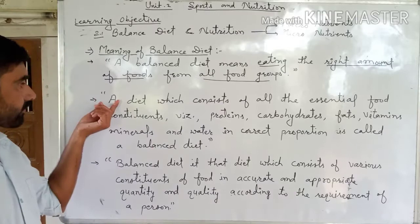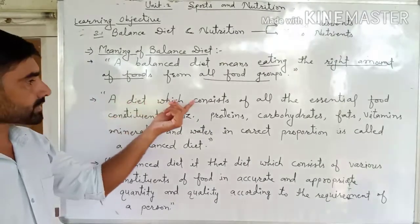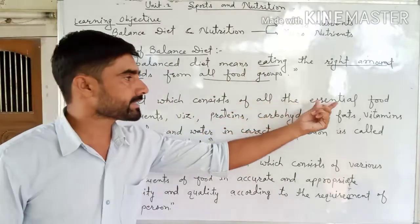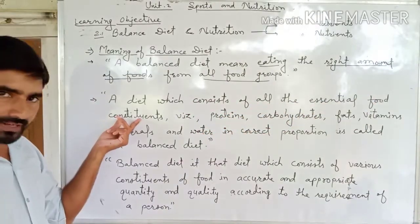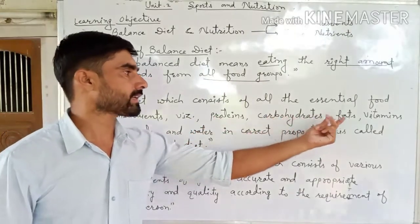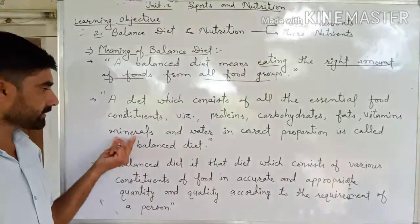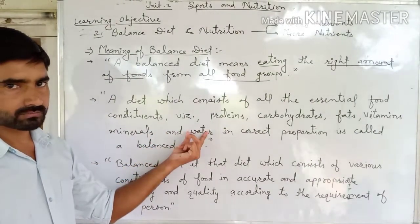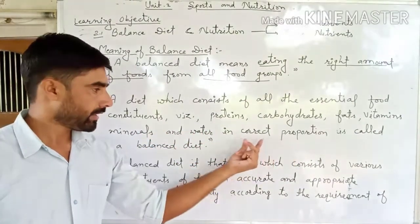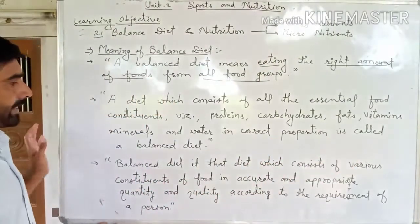Second meaning of balanced diet: a diet which consists of all the essential food constituents — proteins, carbohydrates, fats, vitamins, minerals, and water — in correct proportion. That is called a balanced diet.